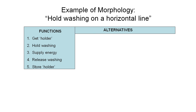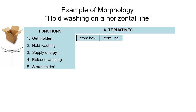These are our alternatives that we're going to list out on the right. For 'get holder,' one option might be that we get it from a box or some storage place. Another option is that we could have the holder stored on the line itself. The other option is to have the holder built into the washing itself, so we don't have a separate object.